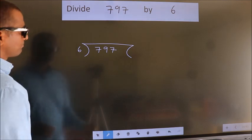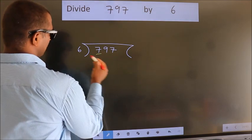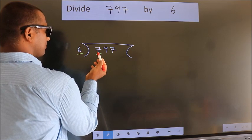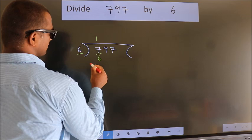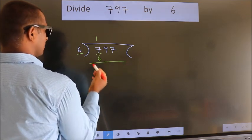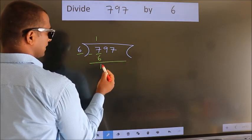Next. Here we have 7. Here 6. A number close to 7 in 6 table is 6 ones, 6. Now we should subtract. We get 1.